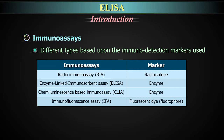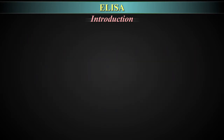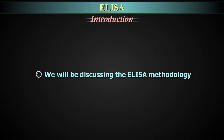A chemiluminescence-based immunoassay, what we call CLIA, is also having an enzyme marker. An immunofluorescence assay, IFA, has a fluorescent dye or a fluorophore as a marker. Here, we will be discussing the ELISA methodology.